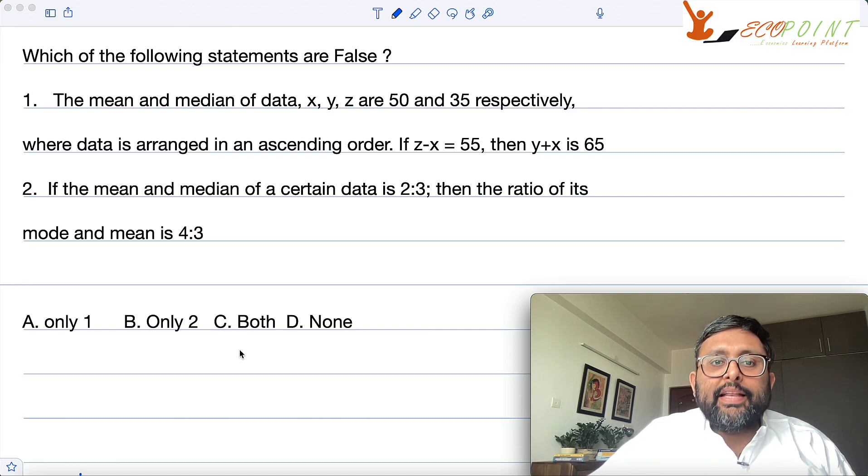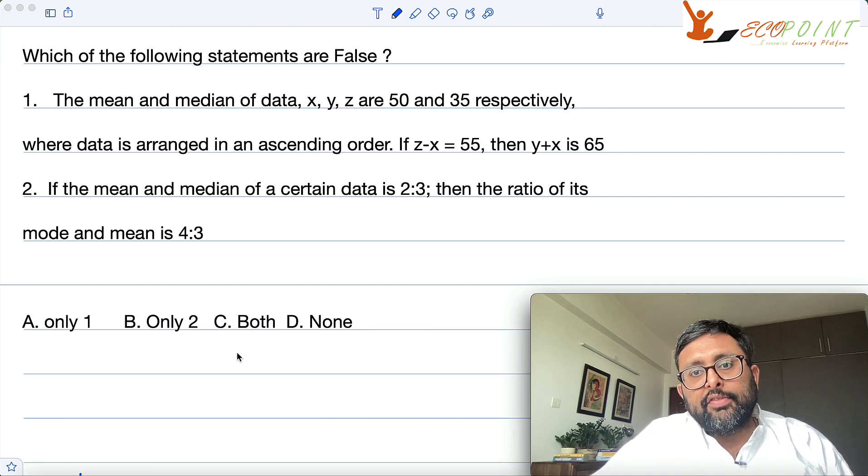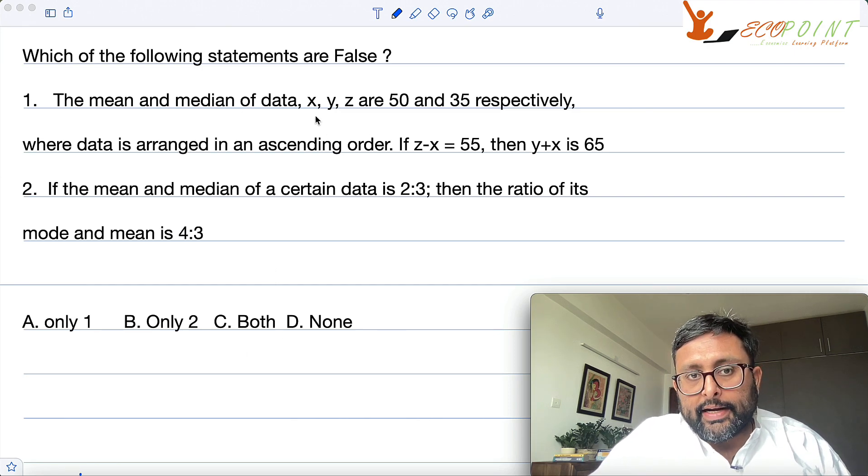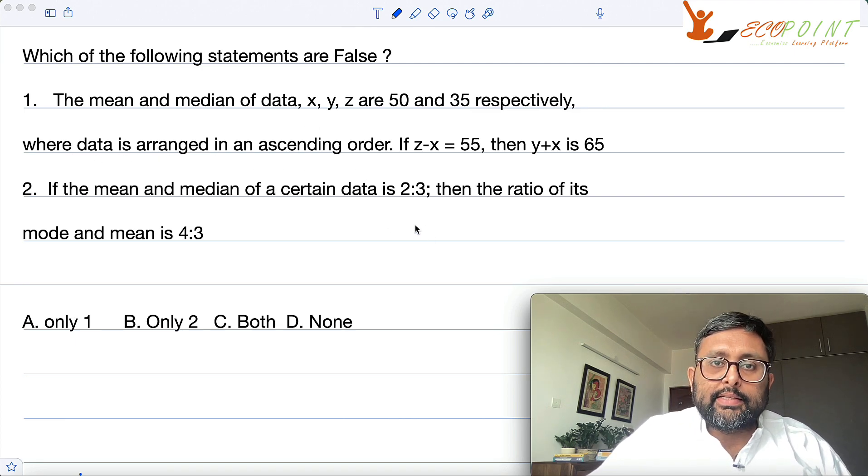The mean and median of the data x, y, z are 50 and 35 respectively, and the data is arranged in an ascending order. So if z minus x is 55, then y plus x is 65. So is that true? The point is that the data is x, y, z and that is arranged in an ascending order. So x is less than y is less than z.